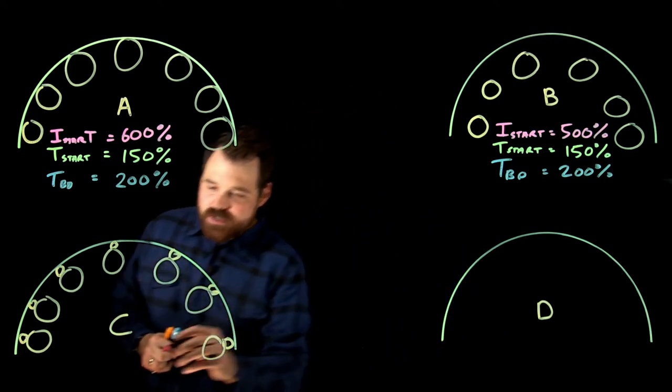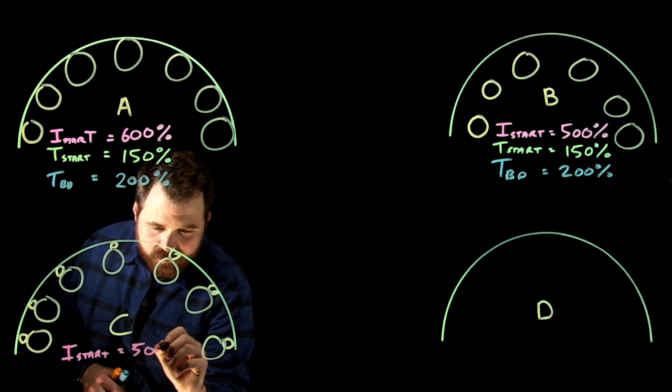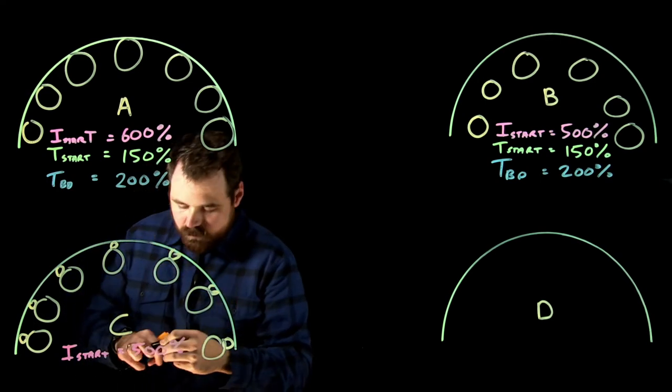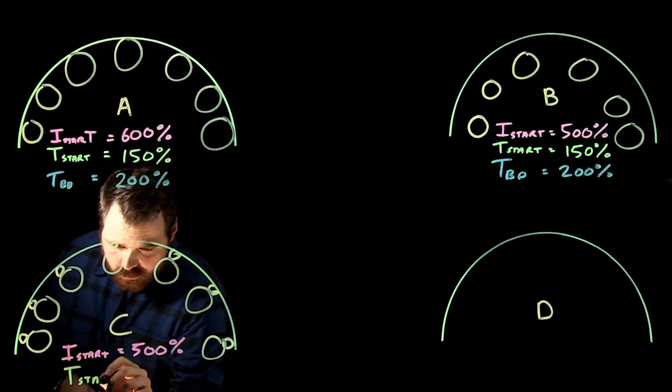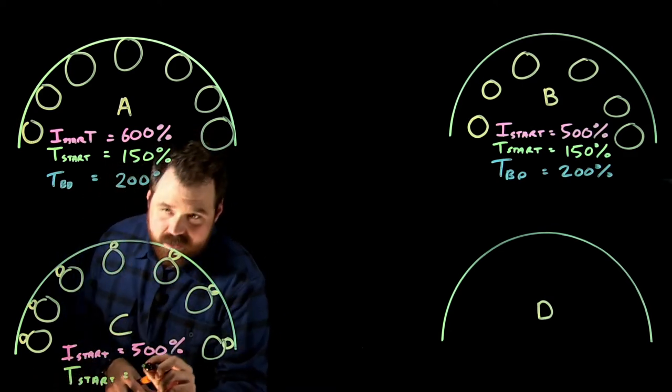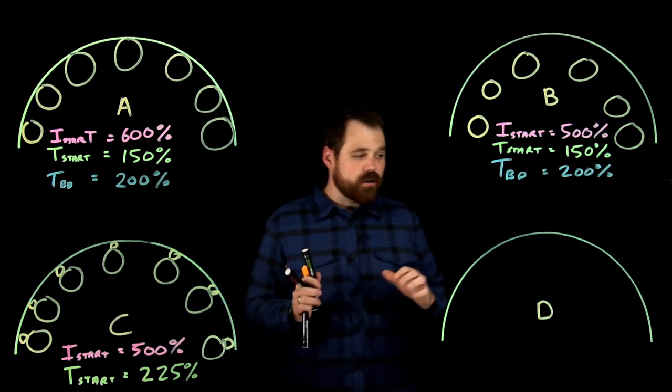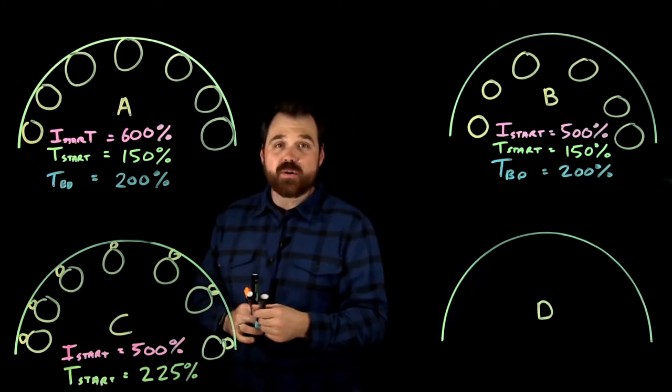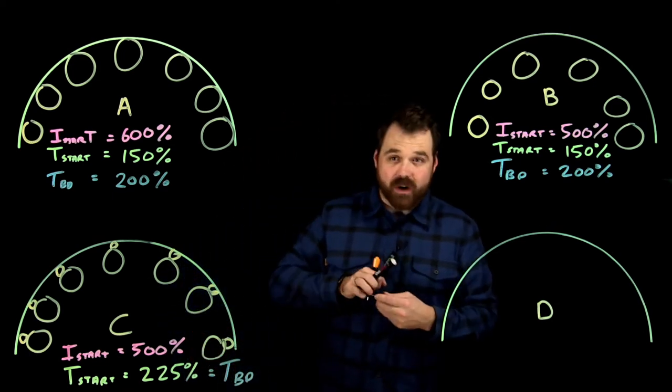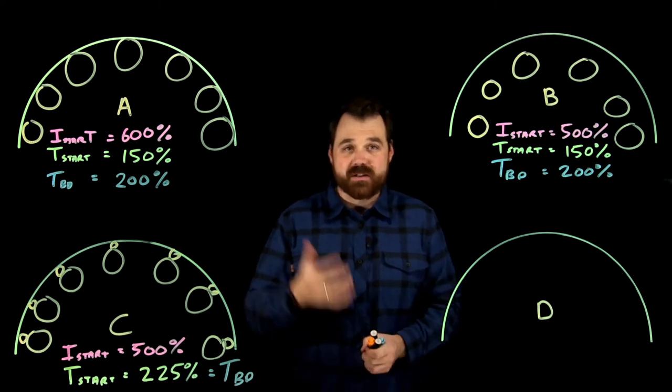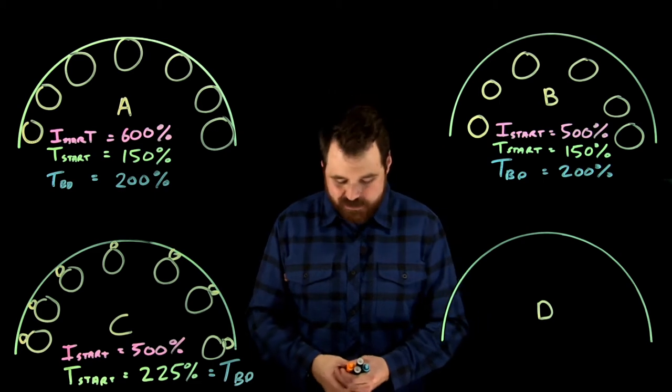So what we kind of see here is our I at start is still that 500%. Our torque at start is about 225%. And that 225% is also our breakdown torque. So we experienced the highest level of torque at start. So this motor is, it can start those high inertial loads, but not frequently again, because it's not going to dissipate that heat.